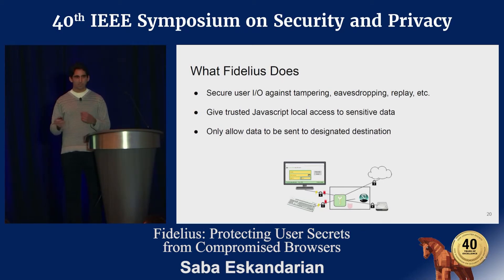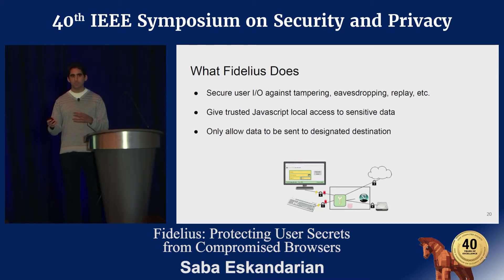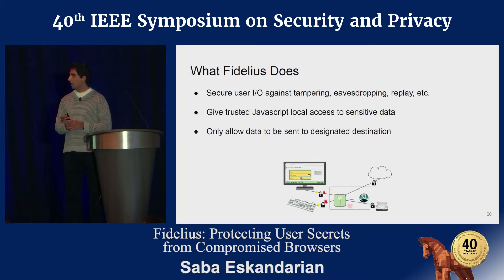Once the user I/O path is secured, Fidelius also gives trusted JavaScript — sent by the server — access to locally interact with the sensitive data. JavaScript running on the whole web page is separate from JavaScript that runs only on sensitive data inside the enclave. We only allow data to be sent to the origin designated in the overlay, and nowhere else.